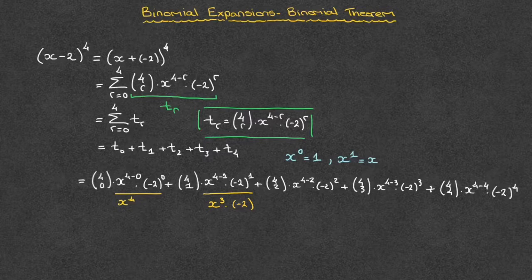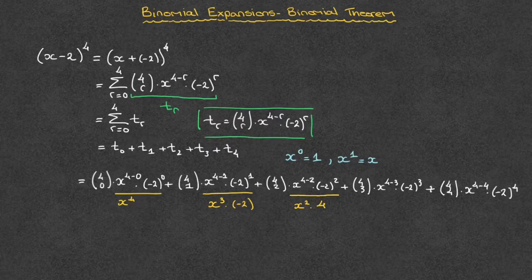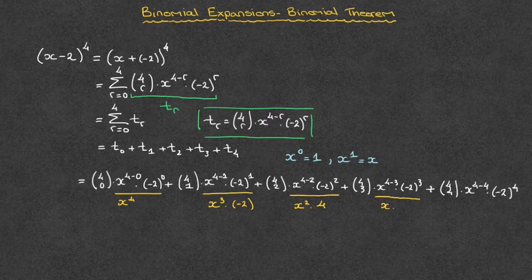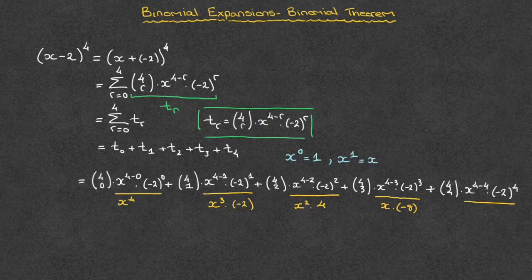Moving on to the next term: x to the power of 4 minus 2 is x squared, times negative 2 squared, which equals 4. The next term: x to the power of 4 minus 3 is x to the power of 1, which is just x, times negative 2 raised to the power of 3, which is negative 8. And finally, in the last term, x to the power of 4 minus 4 is x to the power of 0, which equals 1 so we can ignore it, and negative 2 raised to the power of 4 equals 16.